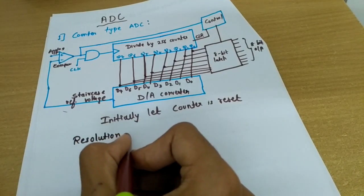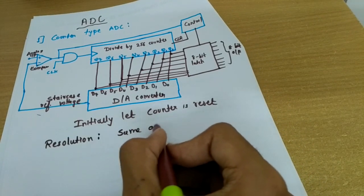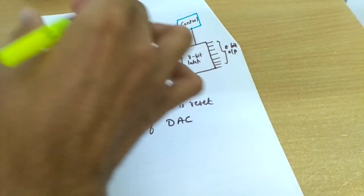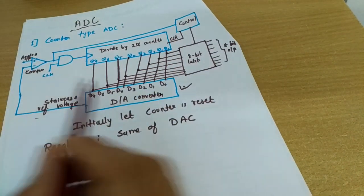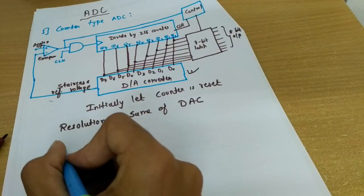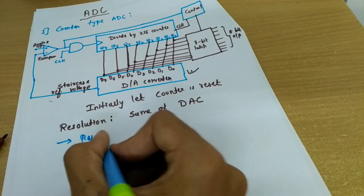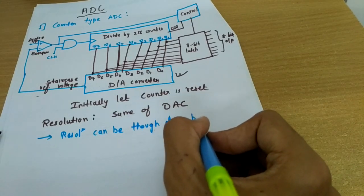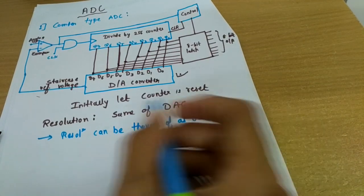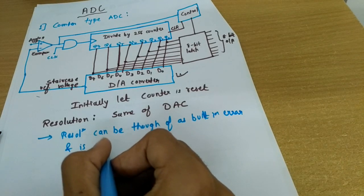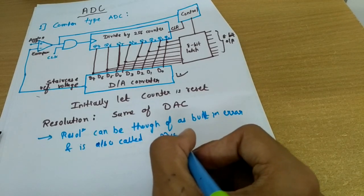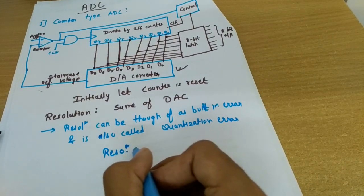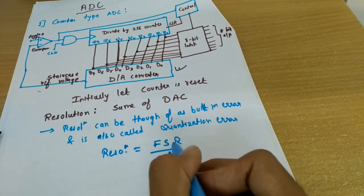Now for some terminology: the resolution of this ADC is the same as that of the DAC being used within it. This resolution can be thought of as a built-in error, also called quantization error. It is given by: Resolution = Full Scale Reading / 2^n, where n is the number of bits.